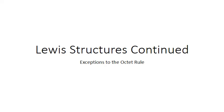Lewis theory is governed by the octet rule. Most representative elements form chemical bonds to gain a full set of eight valence electrons. There are definitely exceptions to this rule, and in this PowerPoint we'll talk about those exceptions.